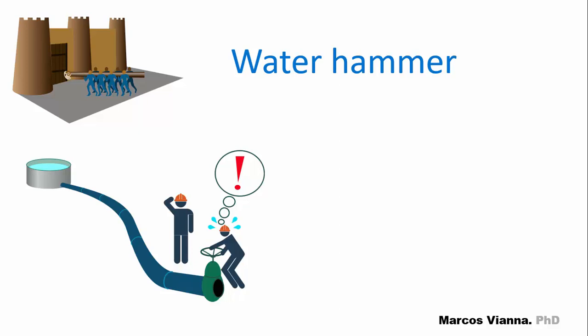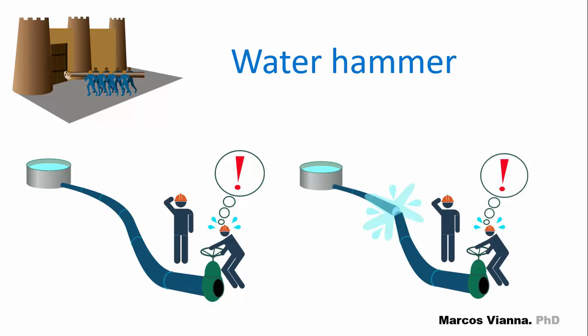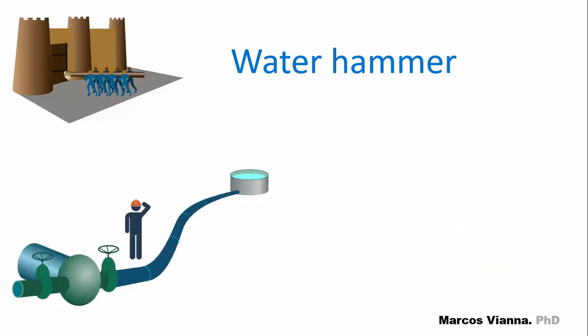For example, when a valve is quickly closed in a transmission line or in a hydraulic power plant, if the closure time is too small, pressures greater than what the pipe can withstand can occur along the pipeline. This phenomenon also can happen in pumping systems.